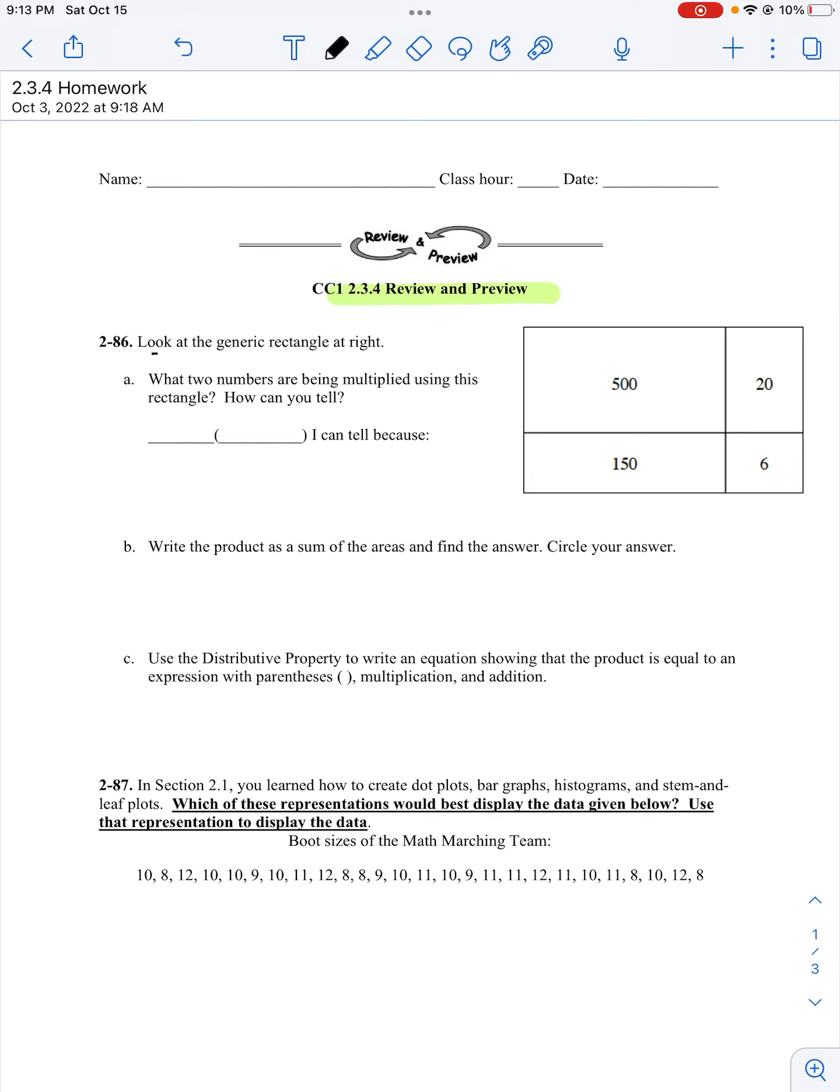What two numbers are being multiplied using this rectangle? How can you tell? If I look at this, I don't have any of the numbers on the outside, so I can't tell immediately what's being multiplied together. However, if I look here at this 6, I can multiply to 6 two ways: 1 times 6 or 2 times 3.